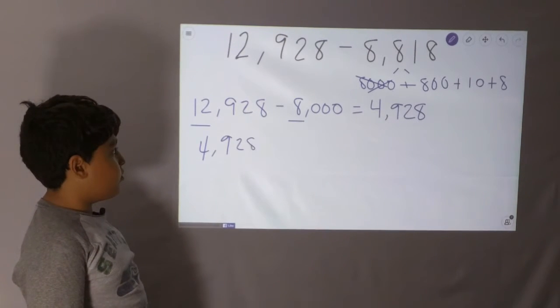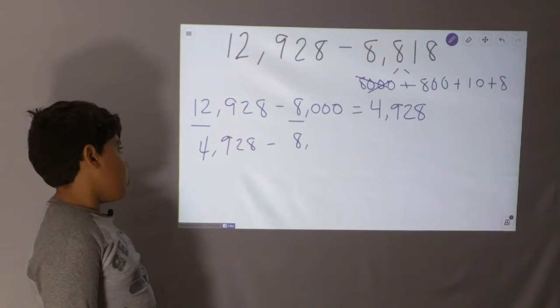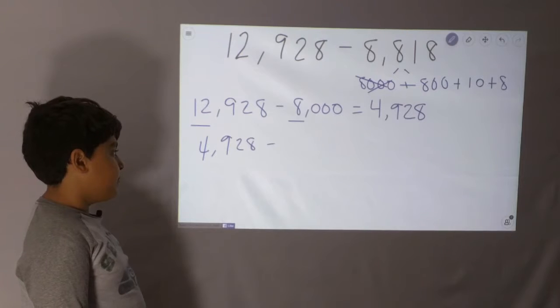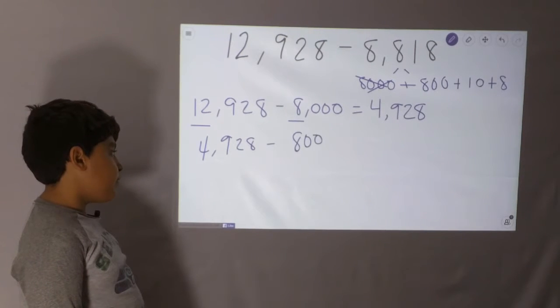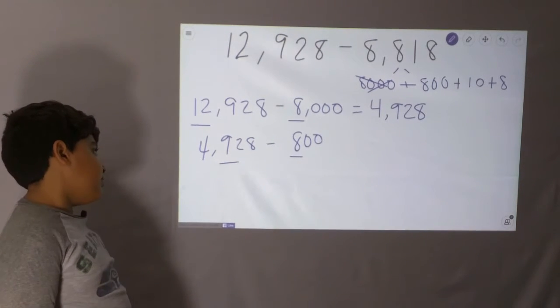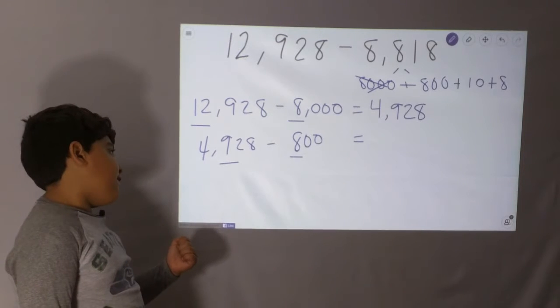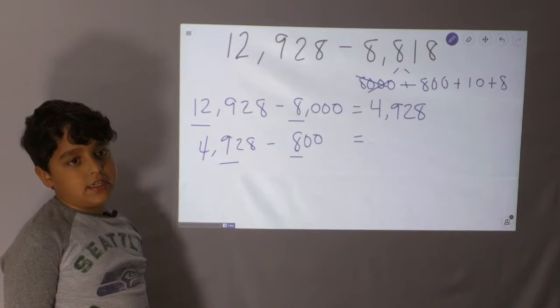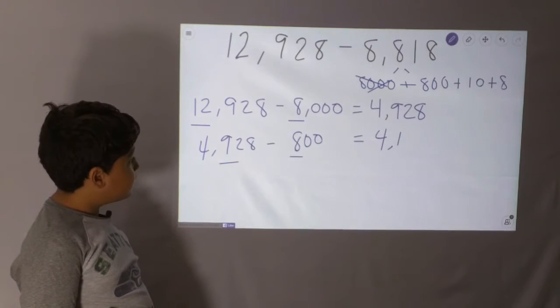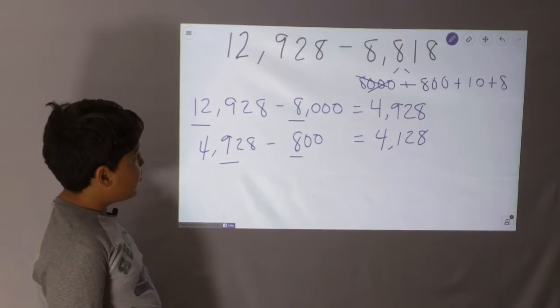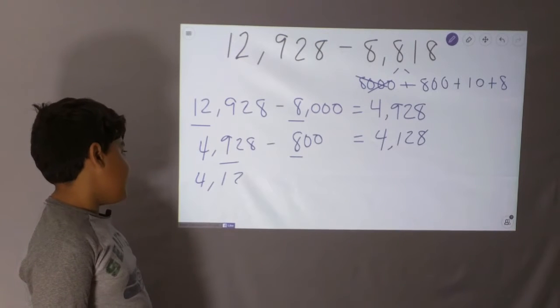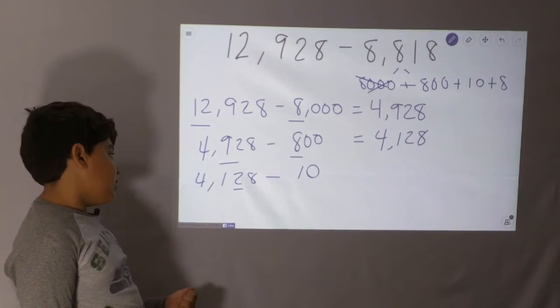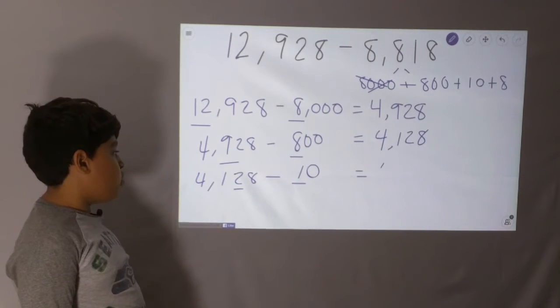Now, we're going to do the 800. 4,928 minus 800. So, 4,928. Now, we're going to do the 10. 4,118.